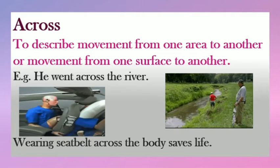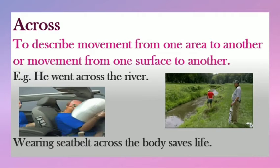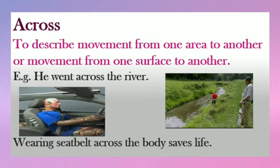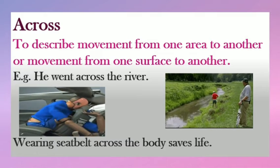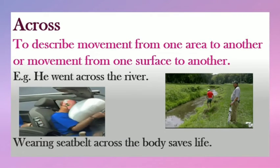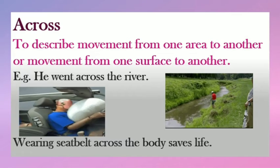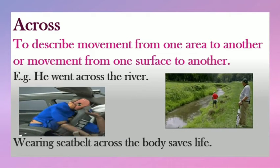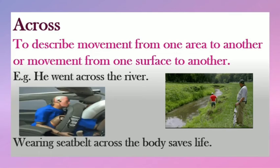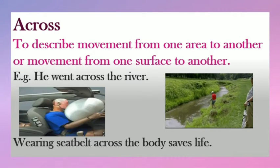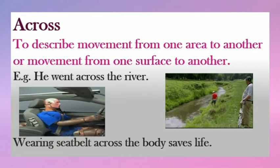I will start with 'across'. Across is used to describe movement from one area to another, or movement from one surface to another. For example, he went across the river — it means he went from one side of the river to the other.